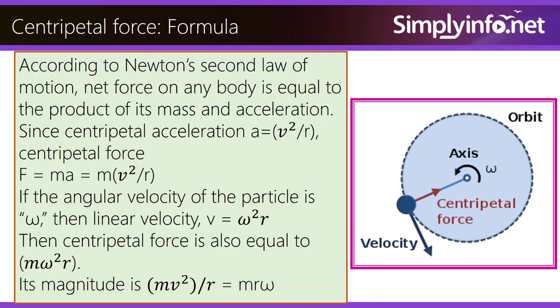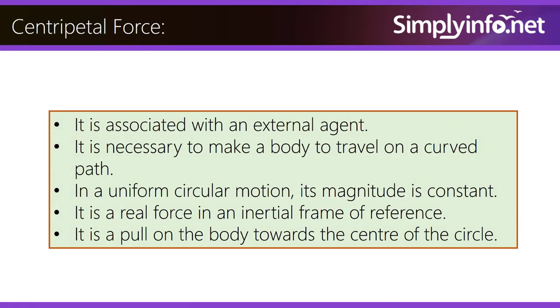If the angular velocity of the particle is omega (ω), then linear velocity v is equal to ω·r. Therefore, centripetal force is also equal to m·ω²·r. Its magnitude is mv²/r, which equals m·r·ω².